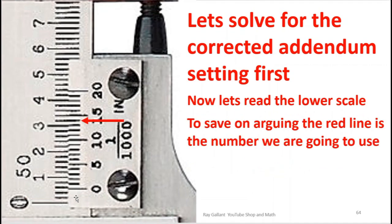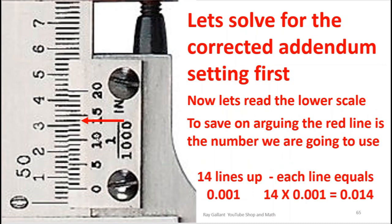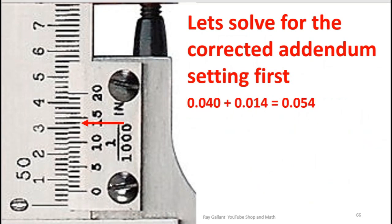Let's read the lower scale. So we're going to say that this line lines up and that's going to be the 14 line. So 14 thou plus 40 thou is going to be 54 thou.